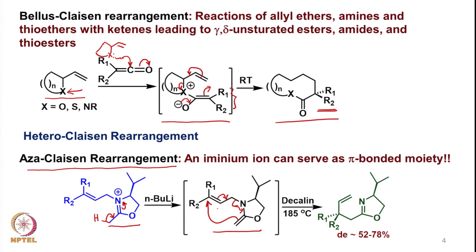Depending on the stereochemistry of the double bond — cis or trans — different absolute configurations are obtained at the new center. If this happens to be a chiral center, the reaction becomes diastereoselective, since the existing chiral center influences the geometry of the new double bond. That is why diastereoselectivity in the range of 52–78% is observed when there is a stereodefined center present.